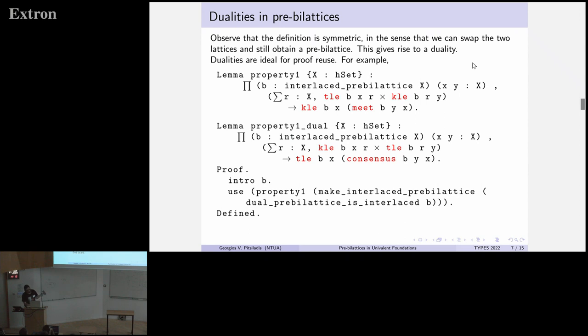Mainly using the fact that some basic properties, interlacing, which we'll see what it is, is respected by switching the lattices. There are also other dualities. We can just invert one lattice. So it's very crucial in pre-bi-lattices that we usually prove one thing and then we say the other seven properties are dual. In Unimath, it would be nice to have a formal way to do that.